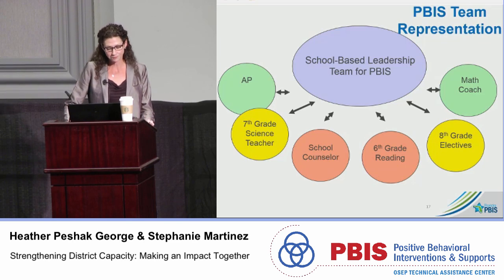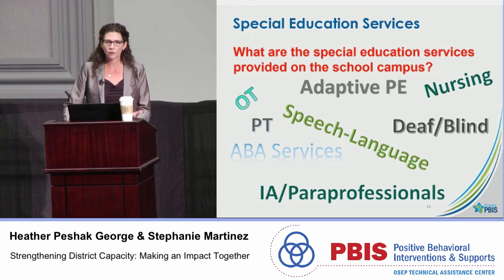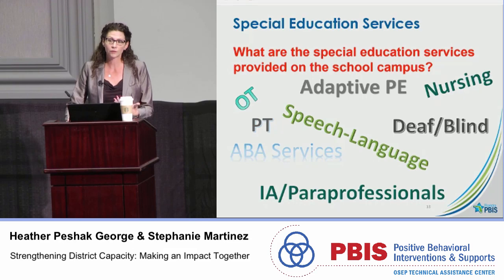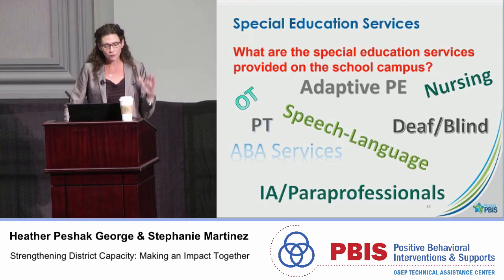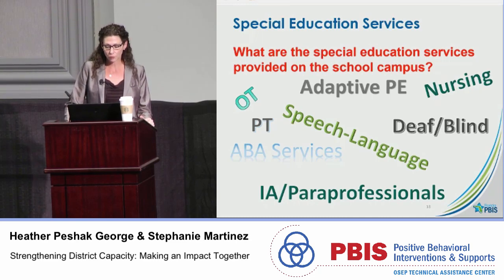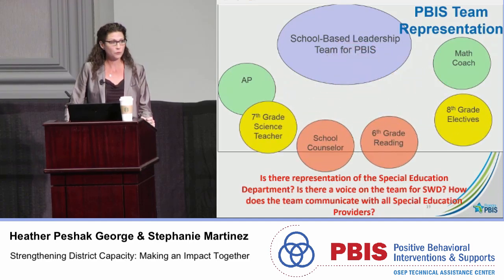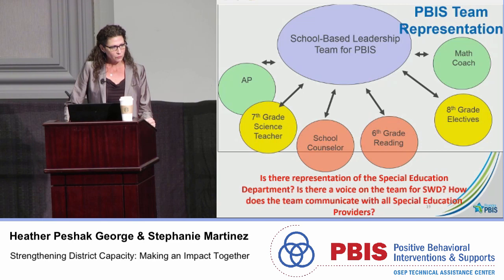Think about what special education supports you have on your campuses — who are those people and what functions are they providing? You may have people coming on campus you didn't know about. This helps identify folks we need to integrate into the process to make sure they're equally included in Tier 1 implementation. Do you have clear representation of special education on your Tier 1 team? Is there a voice for students with disabilities? How does the team communicate with all the special education providers?